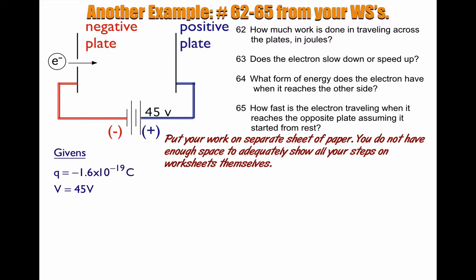If I look at my givens at this point, I have a charge. This charge of an electron is negative 1.6 times 10 to the negative 19, except we're going to ignore the negative sign for a lot of our calculations because we're just going to look for the magnitude of the numbers and reason out directions. And the voltage is 45 volts that it's traveling across.